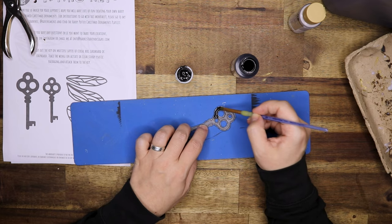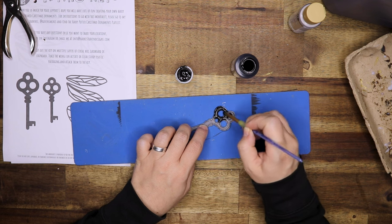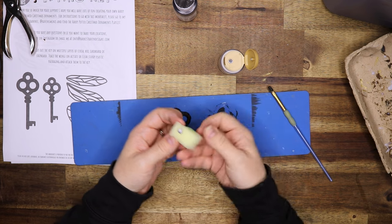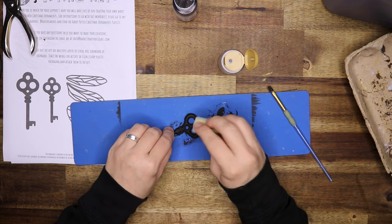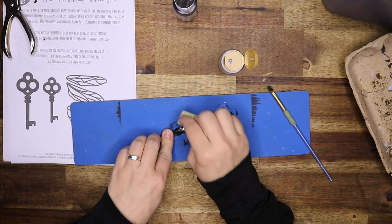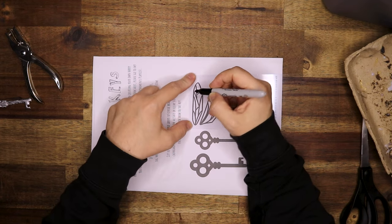This works really well for making a key. It's really easy and it does not use up a lot of supplies. After painting it black, I'm going to paint it silver, but I'm going to add that with a sponge so some of the black parts are still visible.